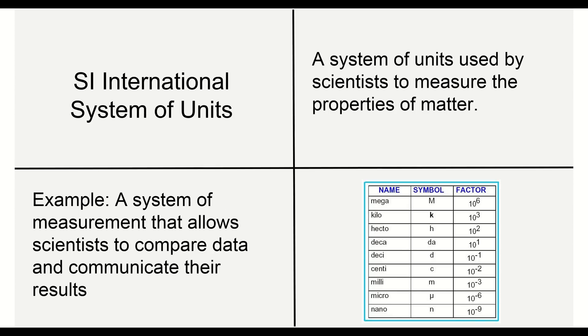Our next word is the SI international system of units or the SI system. We can just abbreviate it SI instead of writing international system of units every single time. The international system of units is a system of units used by scientists to measure the properties of matter. Anything that we're measuring, we use the SI system which is a common way of reporting.